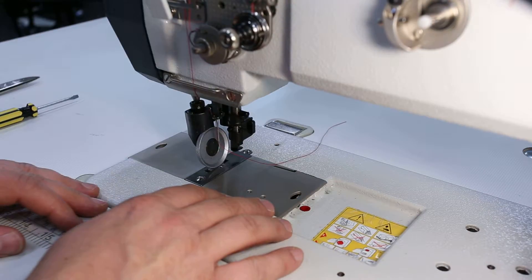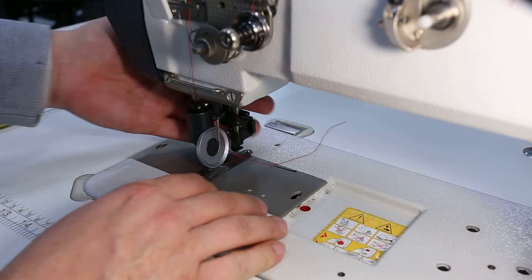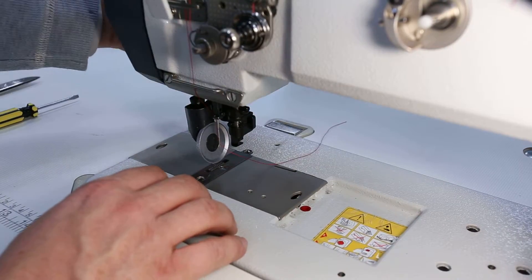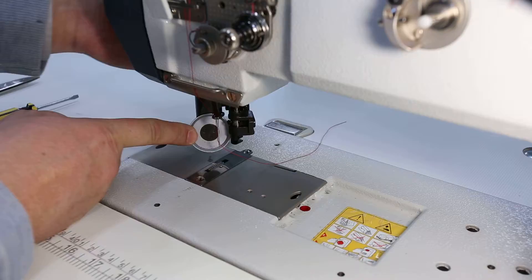To remove and replace the bobbin, first raise the wheel using the knee press or the lever at the back, then move the wheel to the side.